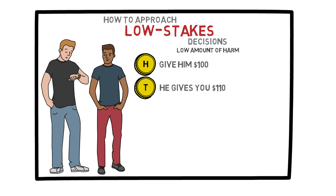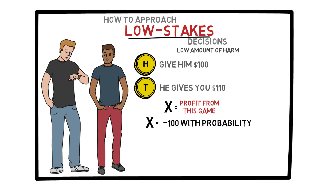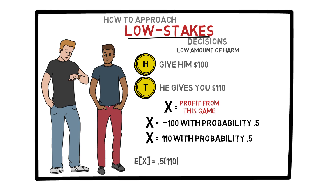Imagine yourself in this scenario where both you and your friend have a few hundred dollars in your pockets. Do you take his offer? Many people would not take him up on the offer because they are afraid of losing 100 dollars, but this would be a mistake. This is a low stakes decision. Let's define the random variable X as your profit from this game. X can either be minus 100 with a probability of 0.5, or 110 dollars also with a probability of 0.5. The expected value of X would then be 0.5 times 110 plus 0.5 times minus 100, which equals plus five dollars. This game has a positive expected value.